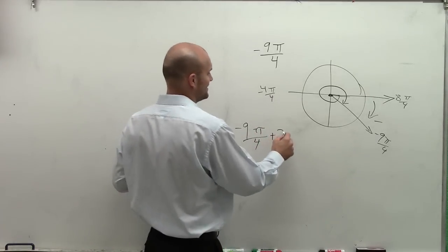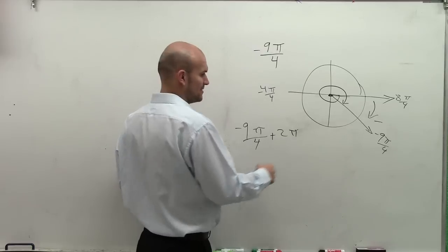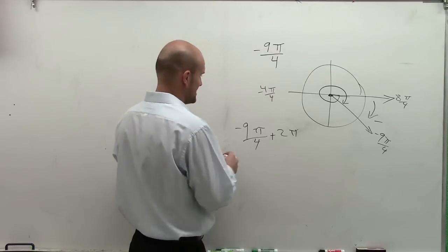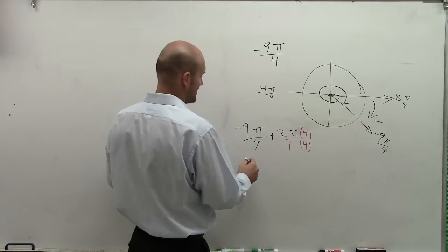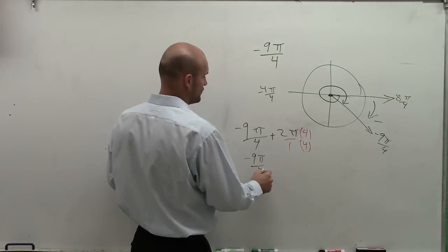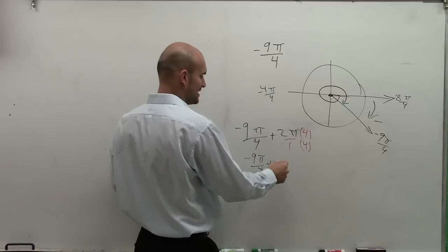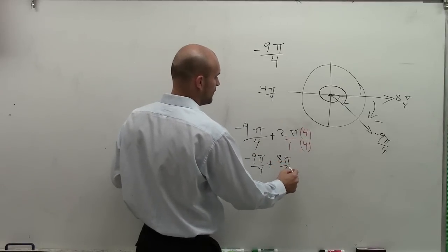Well, if I add 2 pi to this, so I add 2 pi to get the same denominator, I multiply by 4 over 4. Therefore, I get negative 9 pi over 4, plus I get 8 pi over 4.